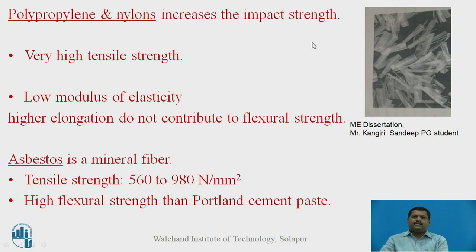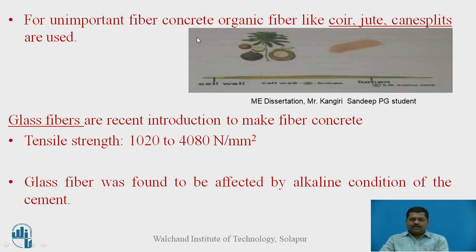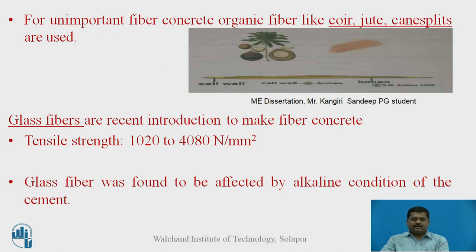Polypropylene fiber has very high tensile strength but a very low modulus of elasticity, which results in higher elongation. Due to this low modulus, it does not contribute significantly to flexural strength. Asbestos is a mineral fiber with tensile strength of 560 to 980 N/mm² and provides high flexural strength in cement paste. Coir fiber and jute fiber are natural fibers derived from coconut trees; they can be used where moderate improvement is expected rather than high tensile strength.